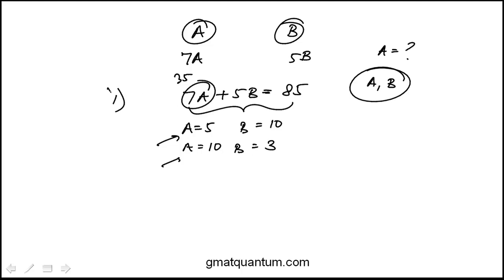And so statement 1 alone is insufficient. Statement 2 says there were 10 students in class B. That alone doesn't tell me anything, so statement 2 alone is insufficient. If I combine statements 1 and 2, I have a value for B and I can solve for A. And together, it is sufficient. Answer is C.